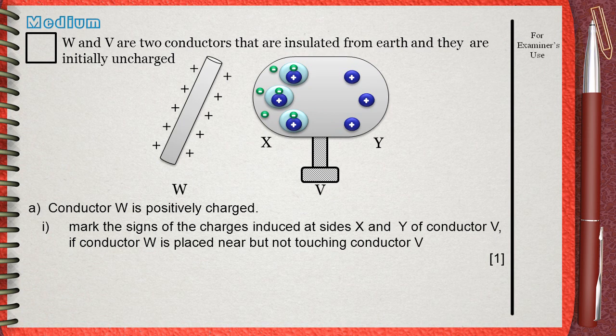This migration of electrons from side Y to side X causes side X to be negatively charged, since it has an extra number of electrons.